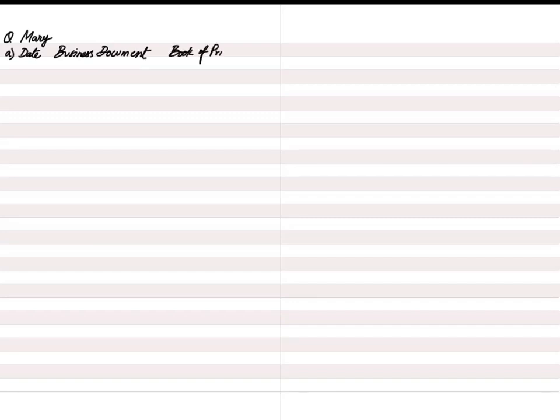In the first requirement, we need to identify the source documents and books of prime entry for the 4th and 8th June transactions. On 4th June, Kim sold goods to Mary at list price 800. Whenever we sell goods on credit, the document issued is a sales invoice — the seller always issues a sales invoice — and it is entered in the sales journal, also known as the sales day book.